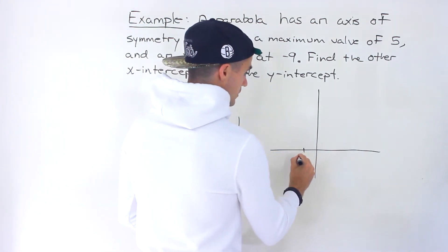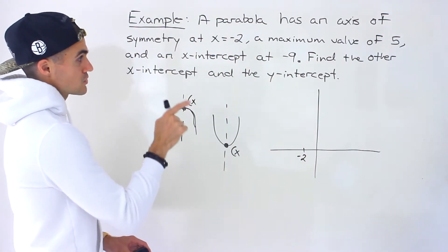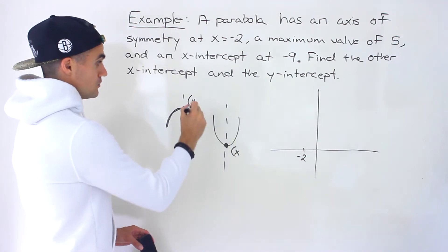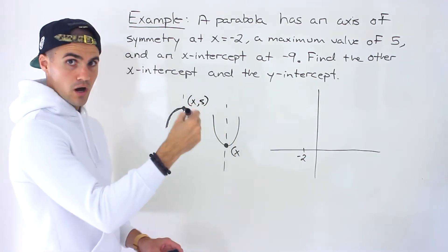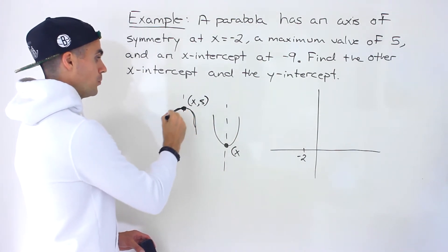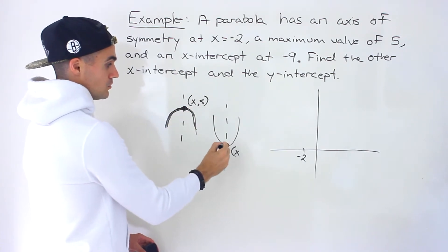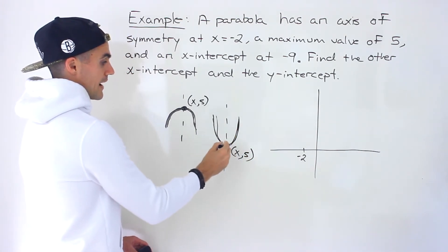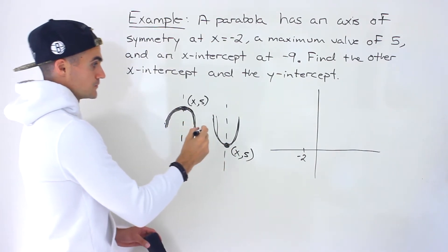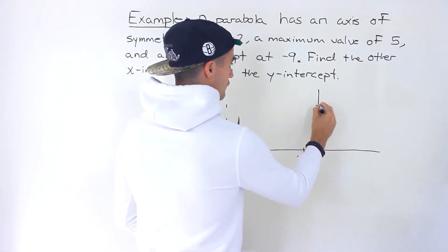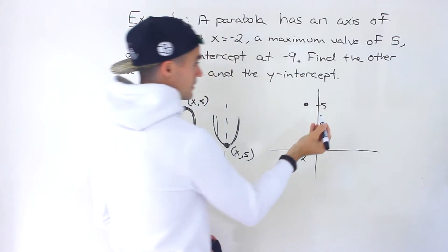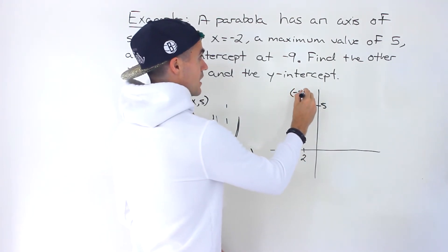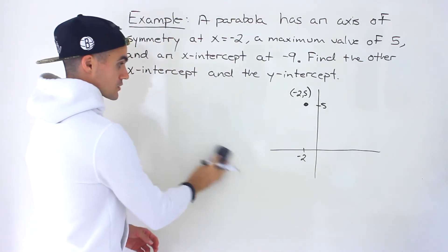So let's put negative 2 there. We're also told the parabola has a maximum value of 5. A maximum value means that's going to be the y-value of the vertex, and it's going to be a parabola that opens down. If it was a minimum value, it would still be the y-value of the vertex, but the parabola would be opening up. So we know we have negative 2 and 5, and that's a good characteristic to have.